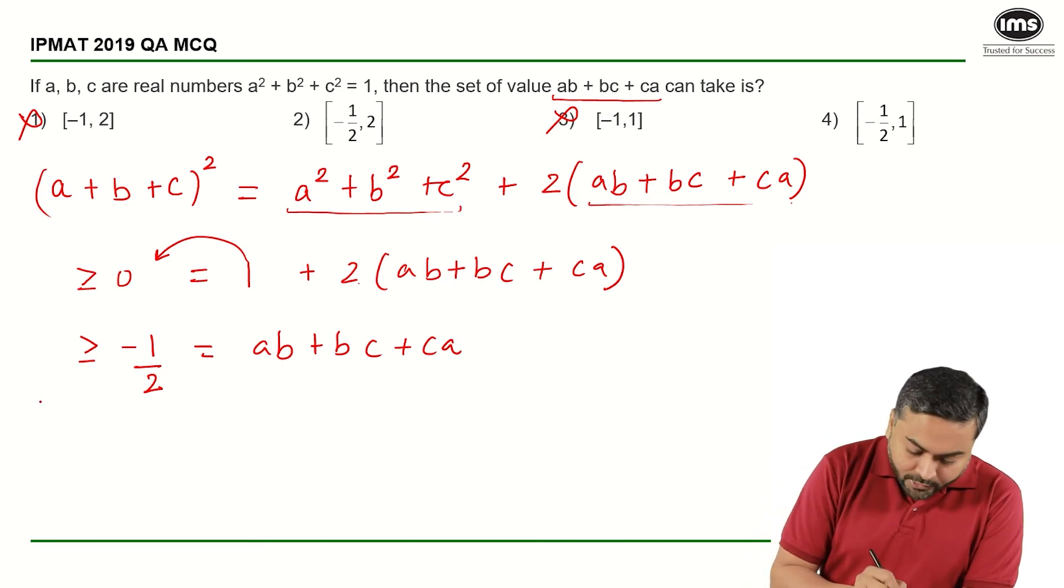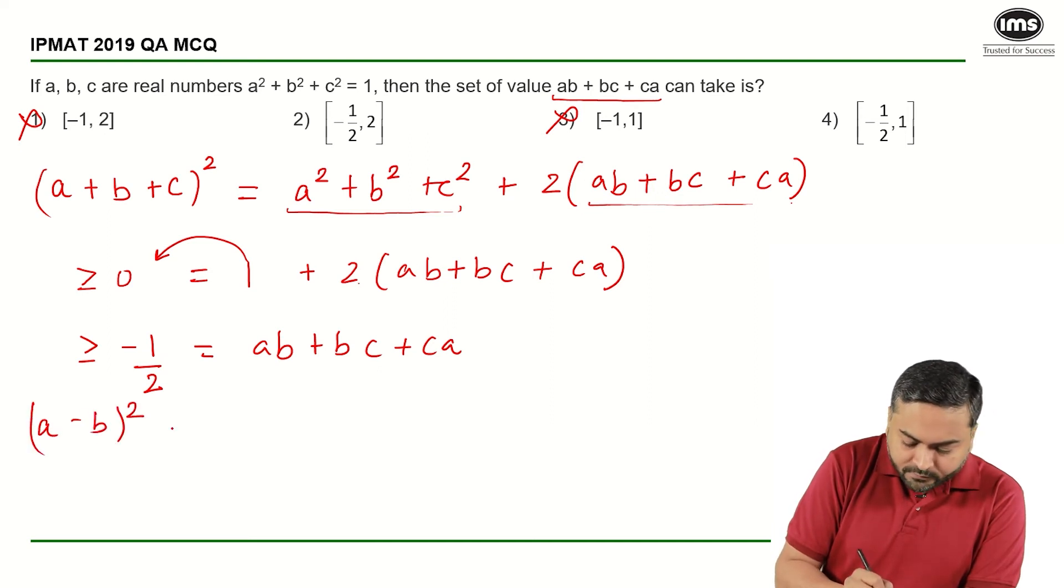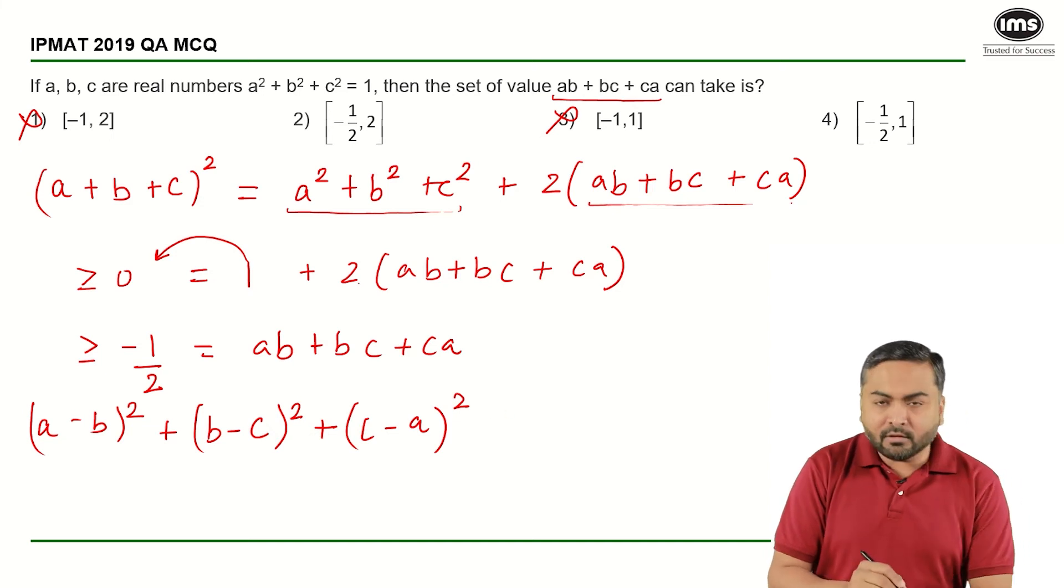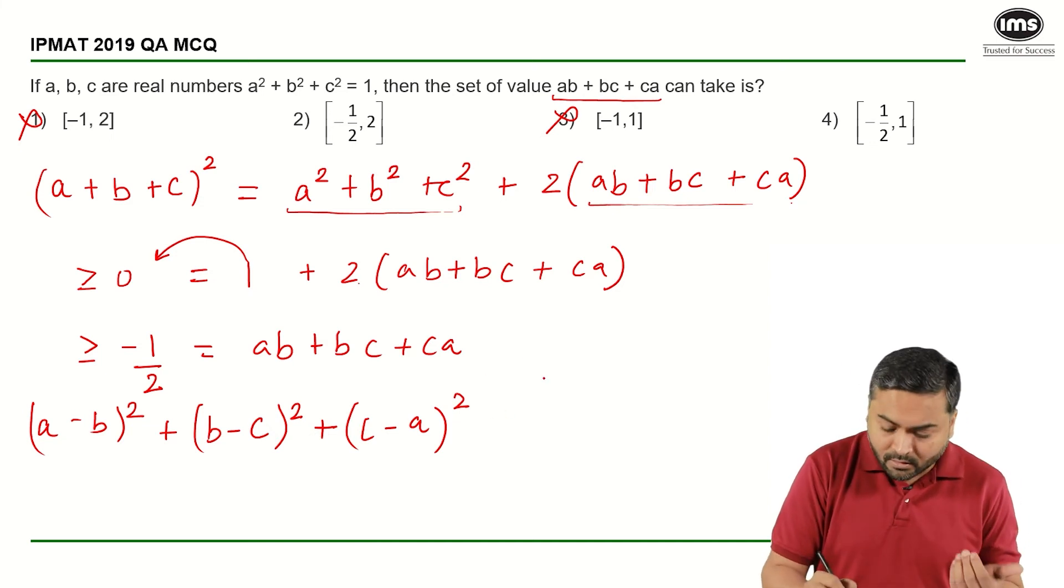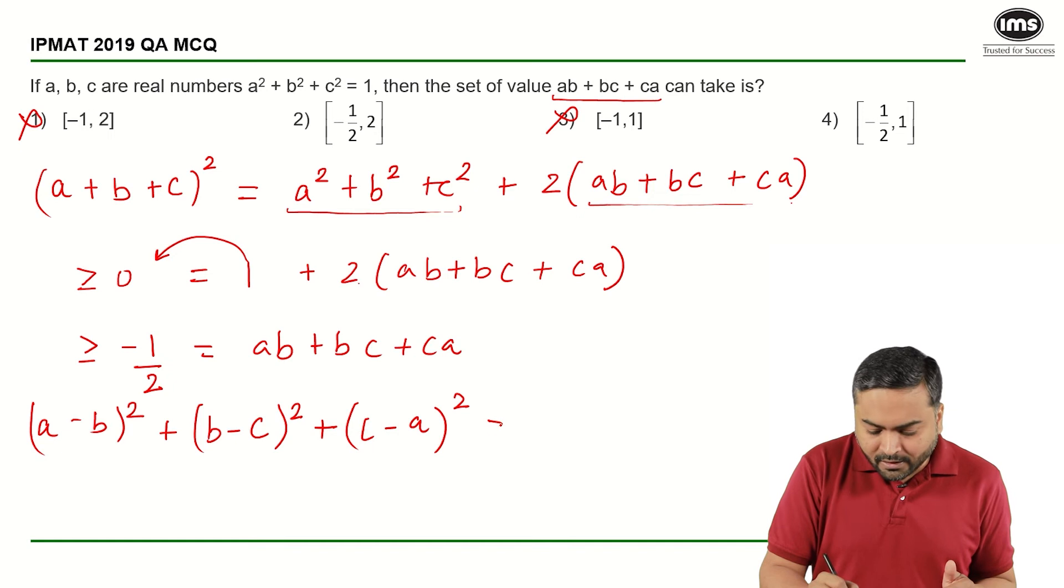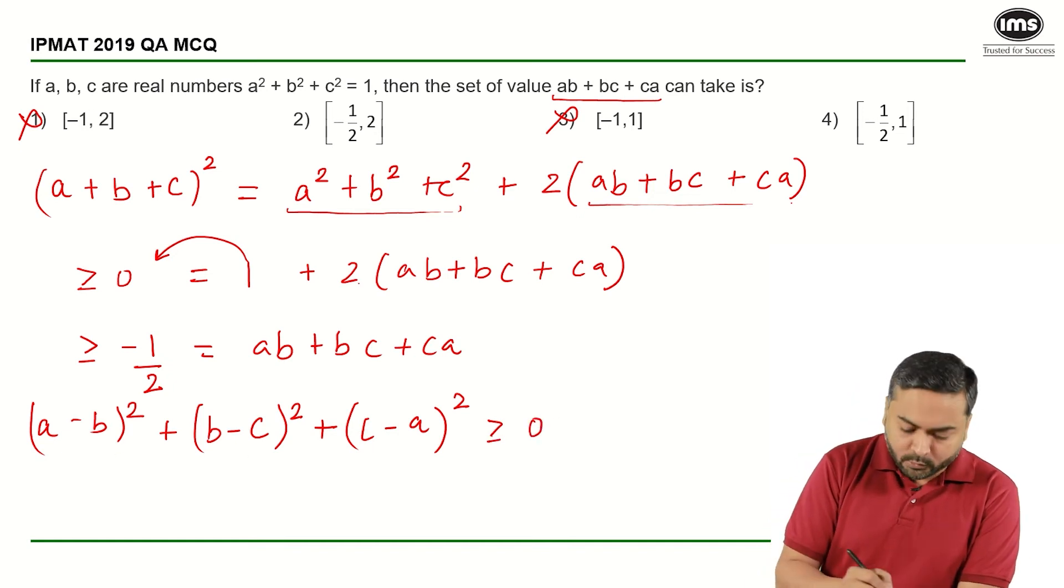Now what I can do is I can use another identity which is (A - B)² + (B - C)² + (C - A)². I know that the addition of perfect squares can be equal to 0 or it can be greater than.